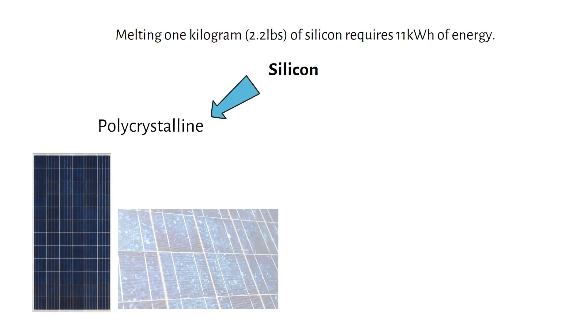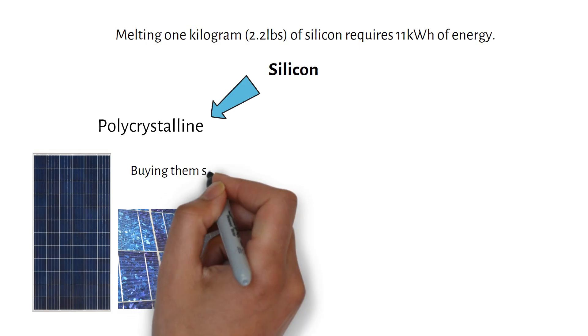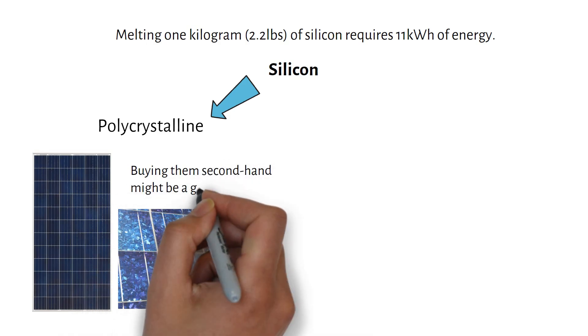First up, polycrystalline panels. You can recognize them by the visible crystals. Their efficiency is lower due to how they're made, but they're also the cheapest. These are almost phased out nowadays. But if you're on a tight budget, buying them secondhand might be a good deal.